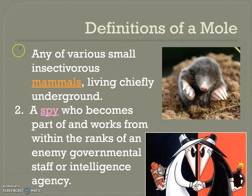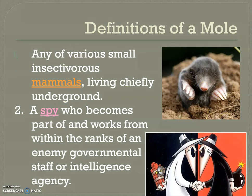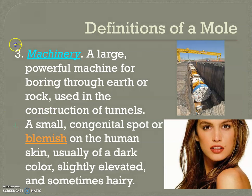Definition one: any various insectivorous mammal living chiefly underground — this adorable little guy right here, the animal. Insectivorous means it eats insects. Definition two: a spy, a double agent that works within a government or intelligence agency — if you know the old cartoon Spy vs. Spy. Definition three: a piece of large, powerful machinery used to construct tunnels — this great big giant mole machine.